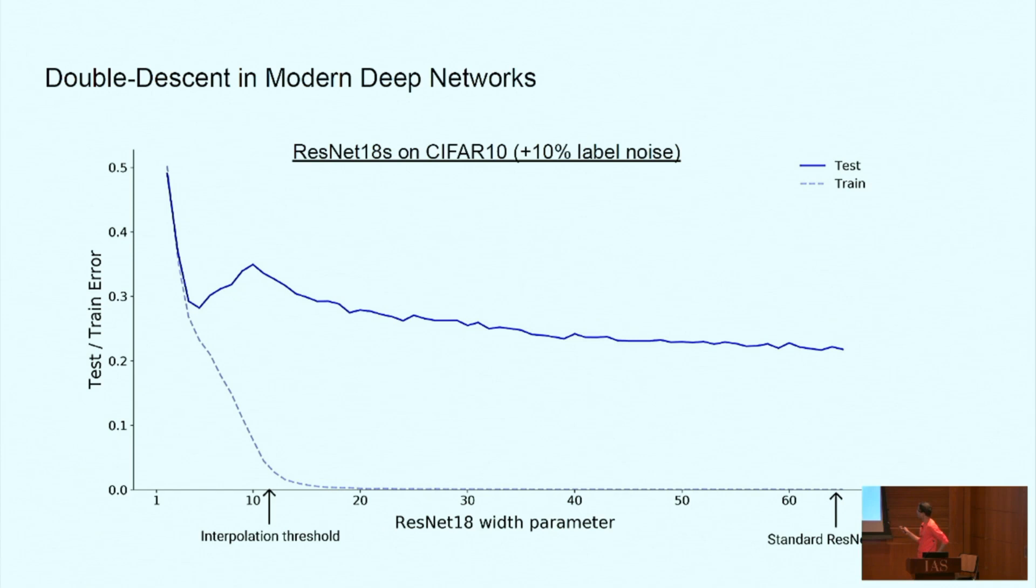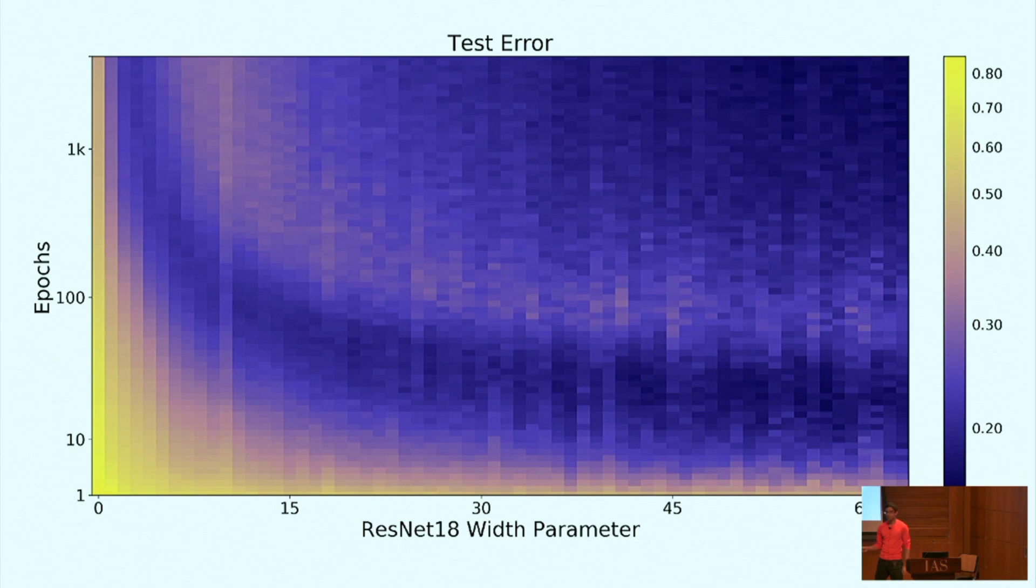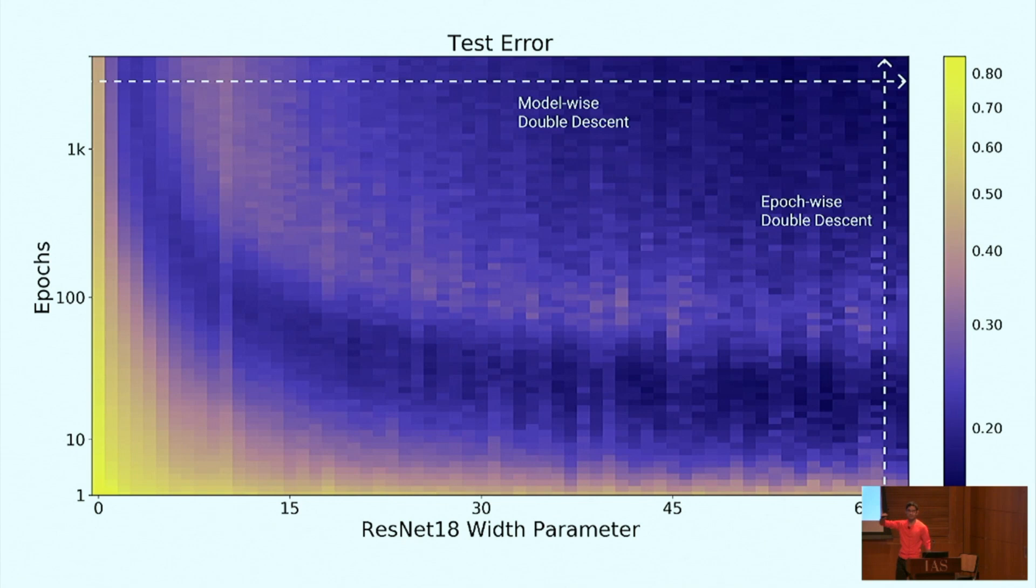Now the really interesting thing is this phenomenon appears to be much more general than we first thought. Let's take the same experiment and look more closely. Now let's plot the test error of these models as a function of both model size on the x-axis and number of train steps on the y-axis. Each column here is looking at the test error of a fixed model over the course of its training. The top most horizontal slice of this plot corresponds to model-wise double descent in the sense we saw before. This corresponds to training models of increasing size for a fixed large number of train steps. We can see double descent here where the test error starts high then goes lower then gets high again and then finally descends.